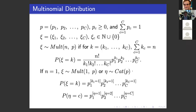Now let's go to some examples. The first example is called the multinomial distribution. This is a discrete distribution. We have C capital classes, and p is the vector of probabilities, so all coordinates sum to one and are non-negative.